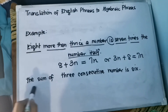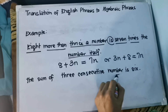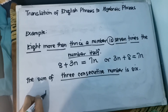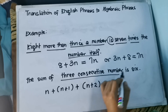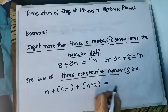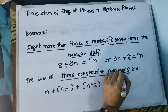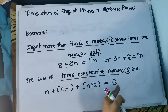The next one is: the sum of three consecutive numbers is six. Remember, consecutive numbers are numbers in sequence, like 1, 2, 3 or 2, 3, 4. Since we have unknown values, we write the three consecutive numbers as N, N+1, and N+2. So the equation is: N + (N+1) + (N+2) = 6, where N is the first number, N+1 is the second, and N+2 is the third.